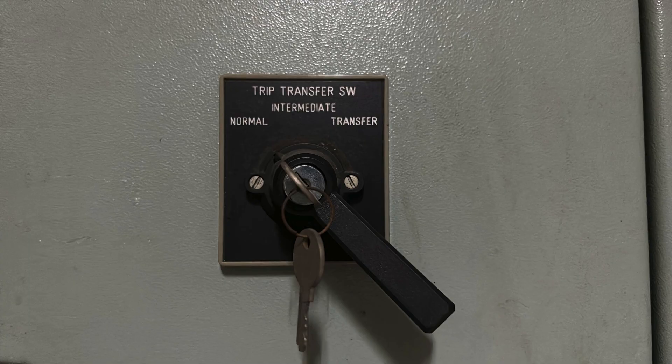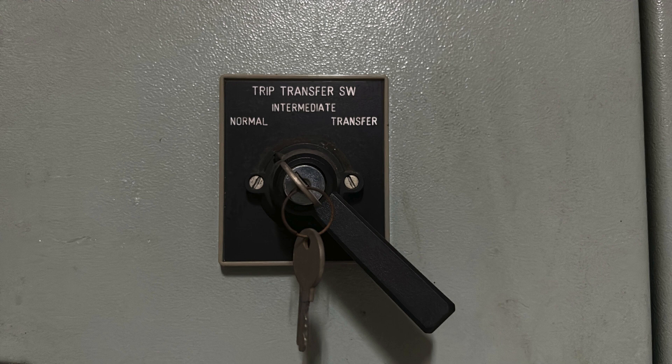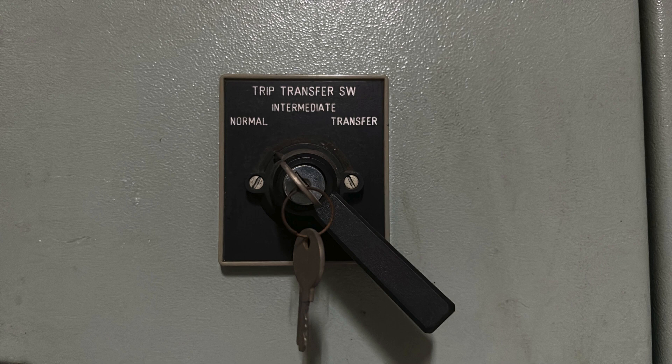The trip transfer switch, or TTS, is essential for transferring feeder protection. It has three positions. Normal: feeder protection is managed by its own breaker. Inter: intermediate state during transfer. Transfer: feeder protection shifts to the bus coupler breaker, CB3. This mechanism ensures the safety and reliability of the system during maintenance or fault conditions.